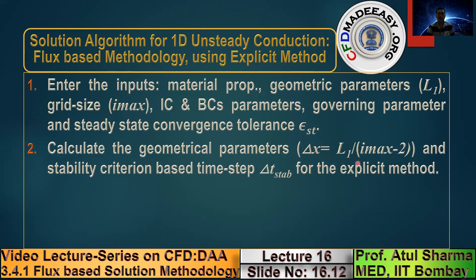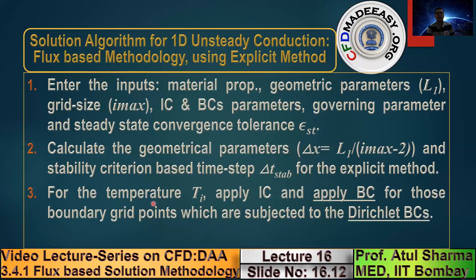In the explicit method, a specific stability criterion from the previous lecture is used to calculate the limiting time step delta t*, which is then used in the computer program. For the temperature, the data for the first picture is given by applying initial conditions and boundary conditions for those boundary grid points subjected to Dirichlet boundary conditions. The application of boundary conditions is presented separately for Dirichlet and non-Dirichlet cases.